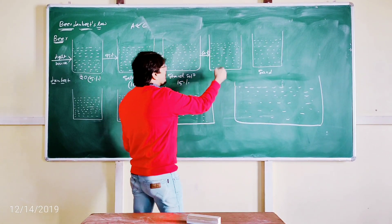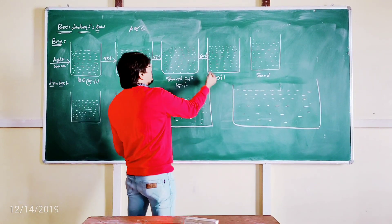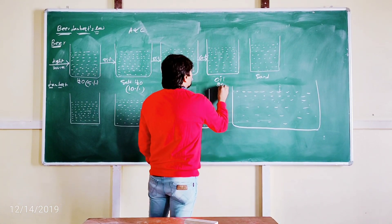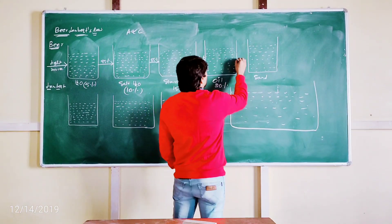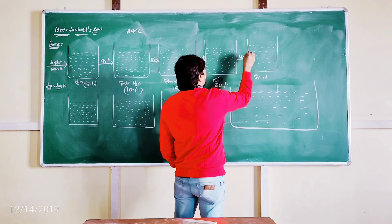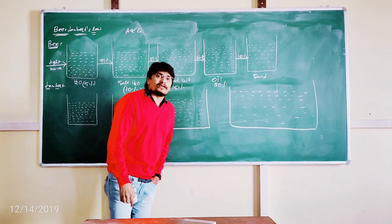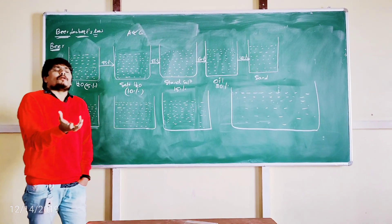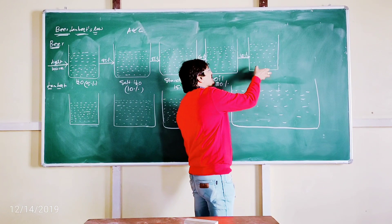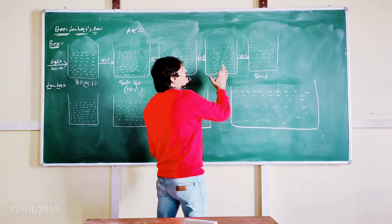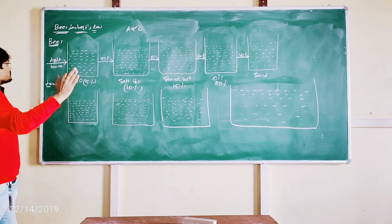Whenever the light is passed through the oil, oil is more concentrated when compared to the starch solution. So let us say that it absorbs 20% of the UV-visible light, and 40% of the UV-visible light is transmitted. And whenever that 40% is passed through sand — sand is a solid, and since it is opaque in nature — it will absorb all the remaining UV-visible light, which is that 40%.